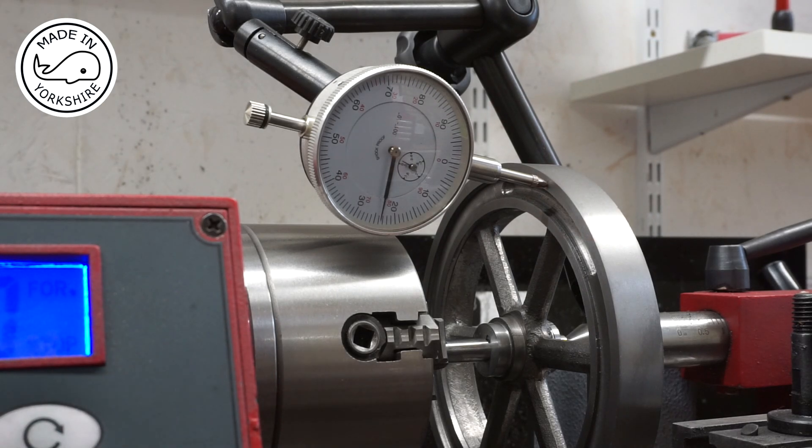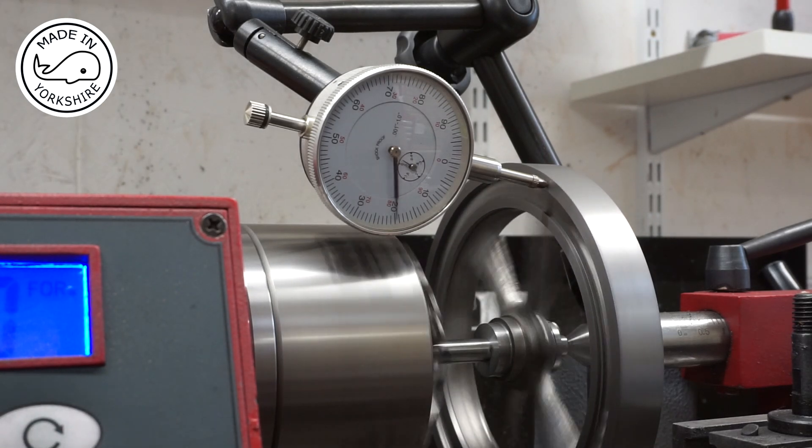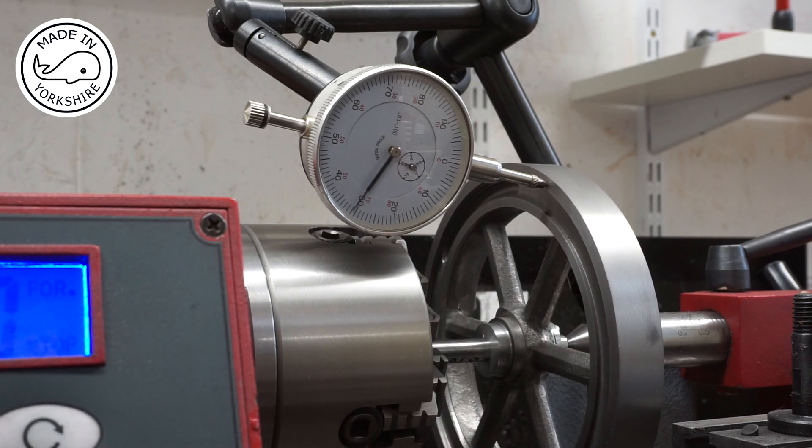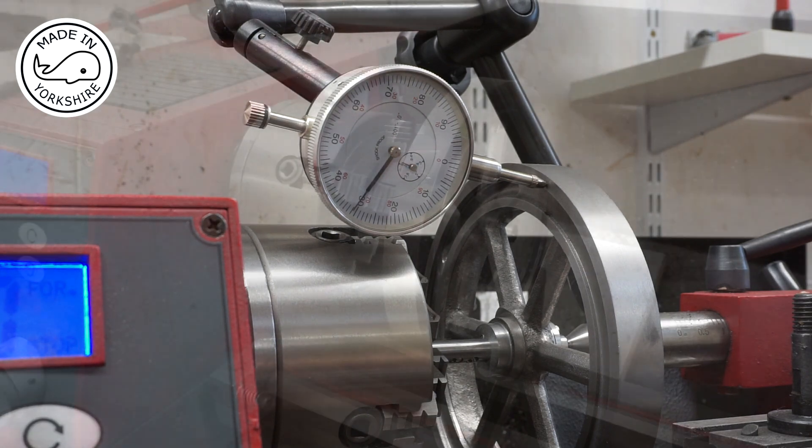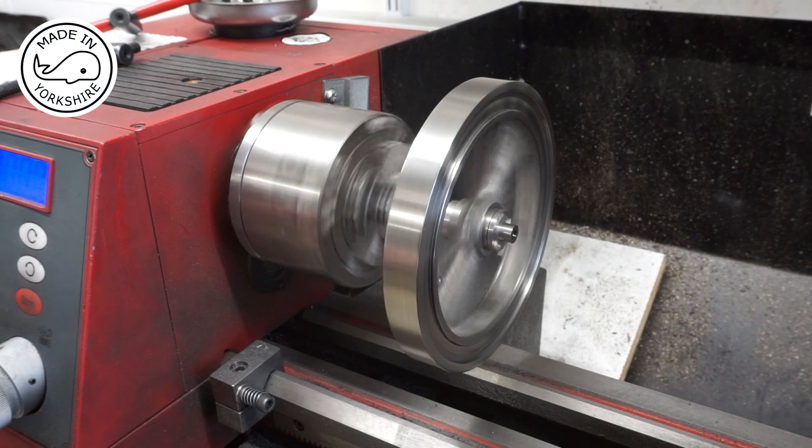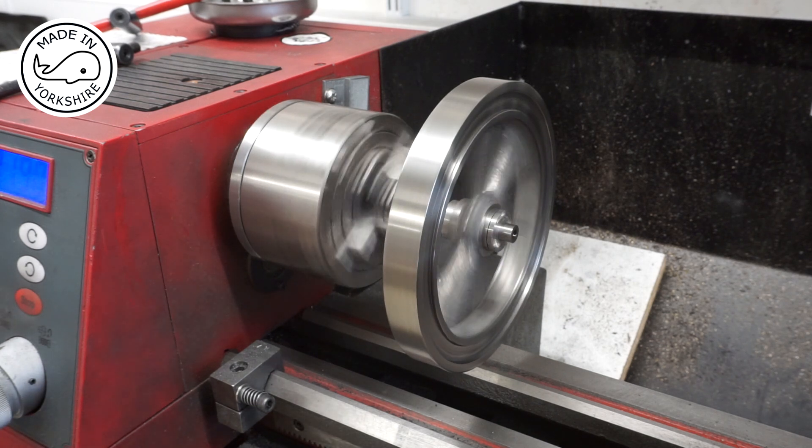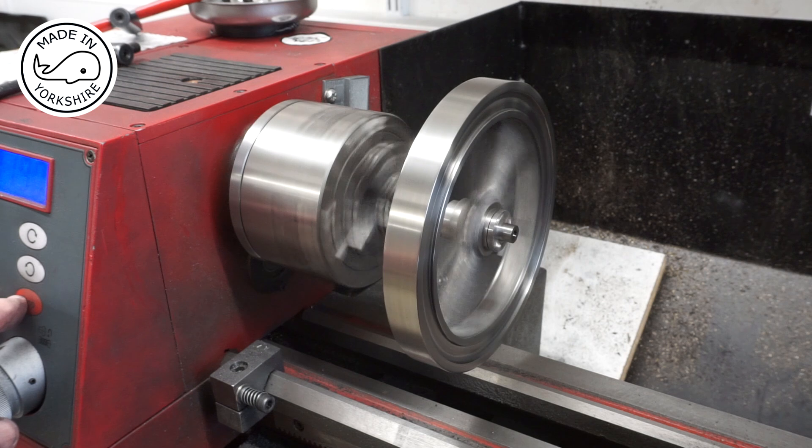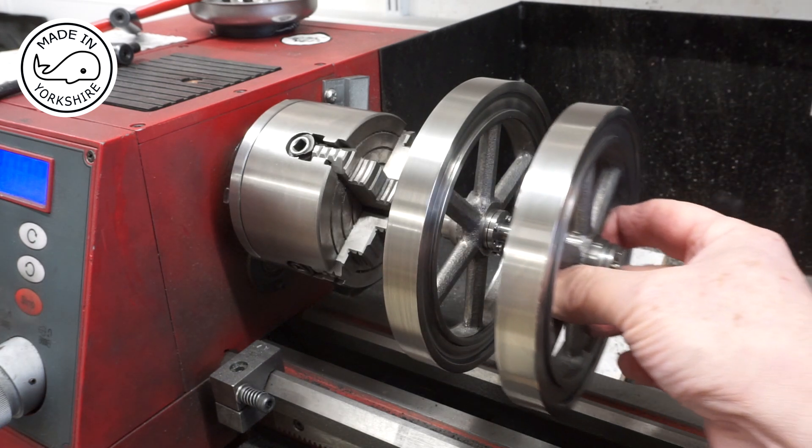So this is the other flywheel. 20 thou out, don't know how that's happened especially when the other one was about 2 or 3 thou out. But anyway I'll have to tidy the sides up and I'll do it in the same way as I did the other one and hopefully we'll be okay. Not looking bad now.